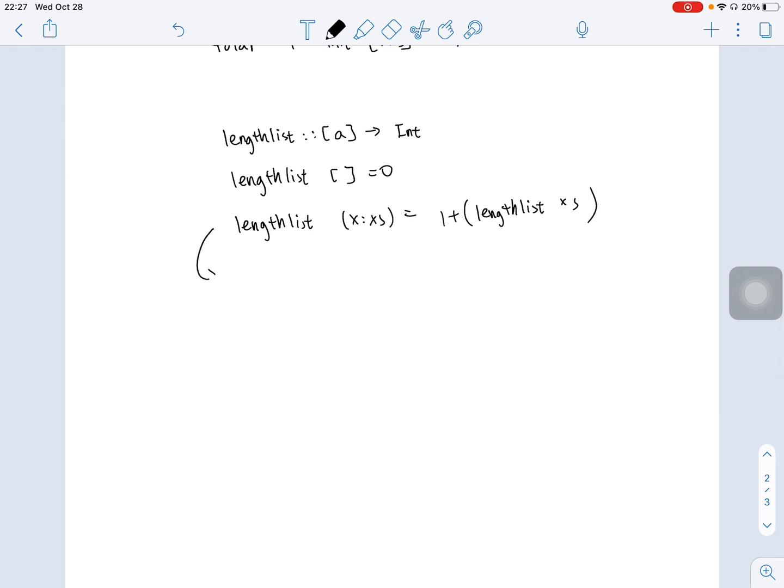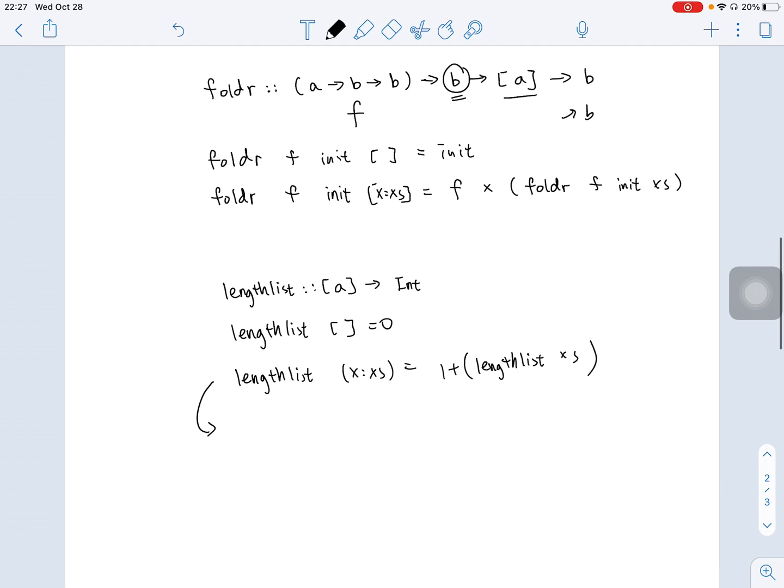So, we can actually do this function by applying the FoldR on it. LensList can be defined using FoldR like this: FoldR, f, this is f, and 0, initial value is 0, and applying on the list.